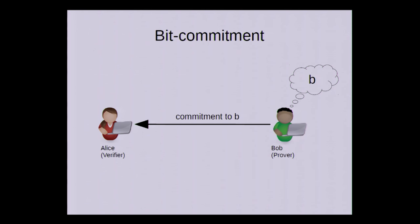So he sends a commitment, and Alice should not be able to learn the value of B from that commitment. That's called the hiding property of the scheme. And when it's time to reveal the value, he sends an opening. From the commitment and the opening, Alice can compute the value B.